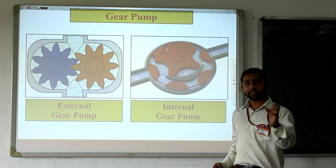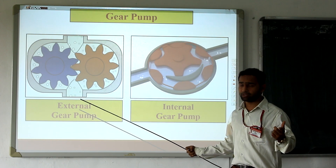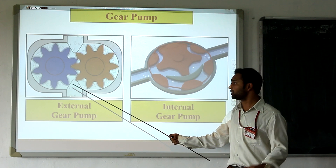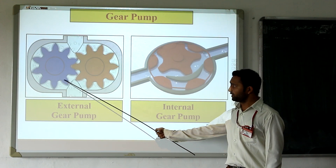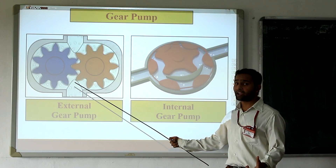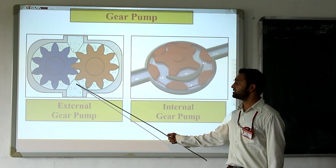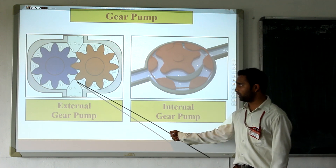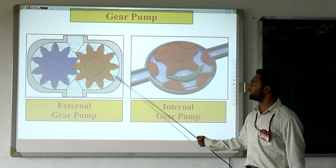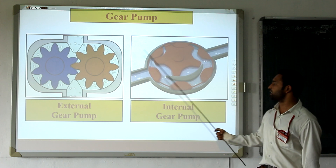Whenever area increases, volume increases, pressure reduces, partial vacuum is created, and fluid flow inside the construction is possible. Fluid moves towards the inside. Because area increases and pressure decreases, a partial vacuum is created, so suction is possible, and then fluid moves gradually from the casing side towards the delivery side or discharge side.